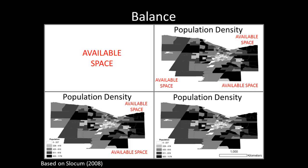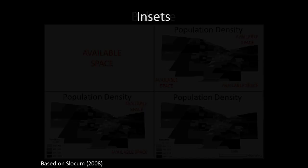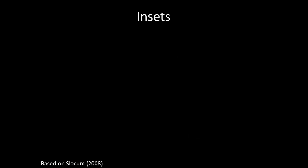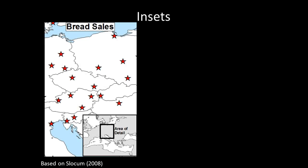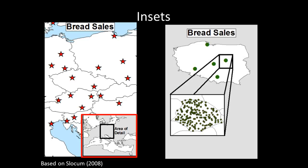Insets are often small maps inside of a larger map layout that provide context and can serve several purposes. For example, insets can be used to locate the primary mapped area — the inset map in the bottom right corner shows where in Europe the area of detail in the main map is located. Conversely, inset maps can also be used to enlarge important areas or show areas that are congested with a large number of features, as shown in this example where a congested area has been enlarged to show specific details.